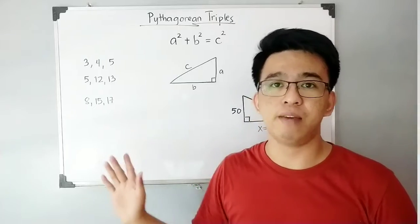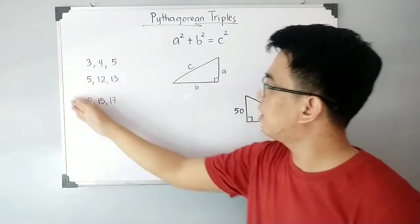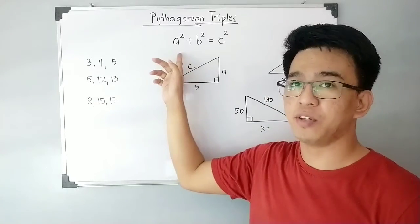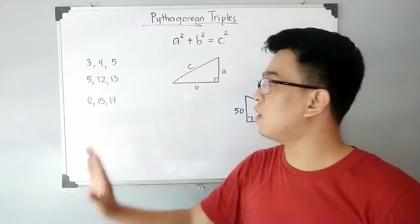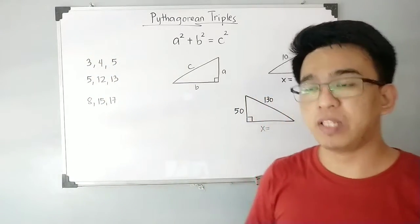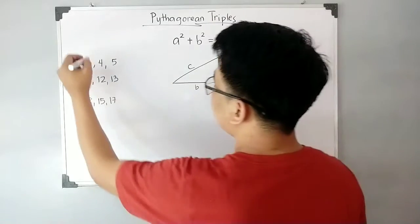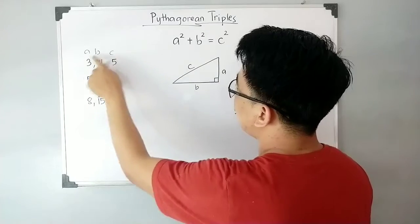Now let us prove that these three can satisfy this equation. For us not to take this video too long, we'll just check whether 3-4-5 are examples of Pythagorean triples. Let's say this is your a, your b, and your c. Substituting these values to your formula...